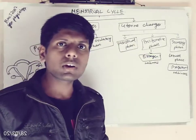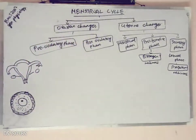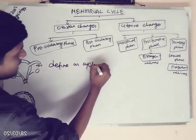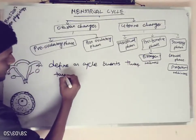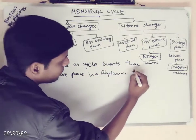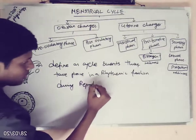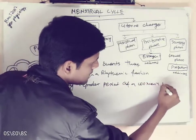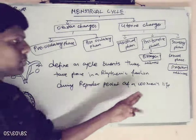Welcome to MLT online classes. In this lecture we are going to discuss about the menstrual cycle. The menstrual cycle can be defined as cyclic events that take place in a rhythmic fashion during the reproductive period of a woman's life.